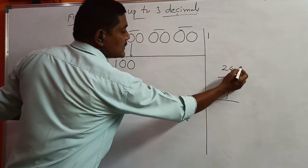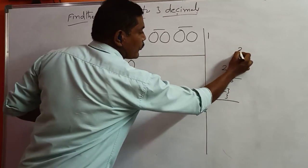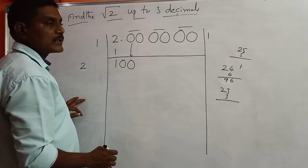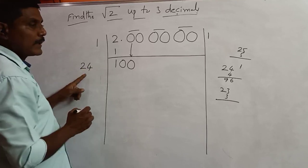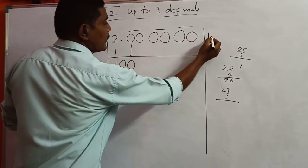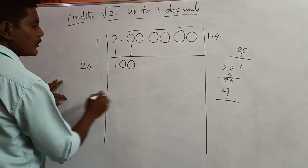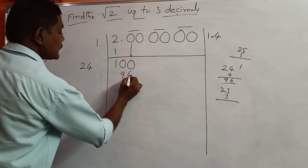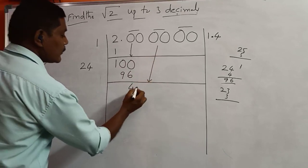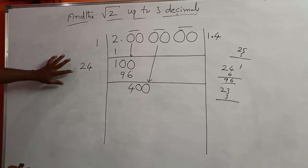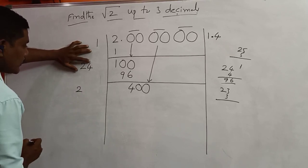Again put down 2 zeros — it becomes 400. We double the number 4 to get 8. The divisor becomes 280. We need to find what number to write: if you write 82×2=164, if you write 1: 281×1=281. 400 is greater than 281, so we write 1. Then 1 into 281 equals 281. Subtracting gives 119.